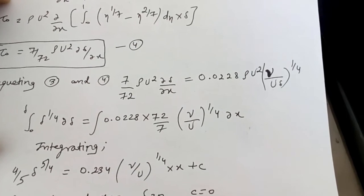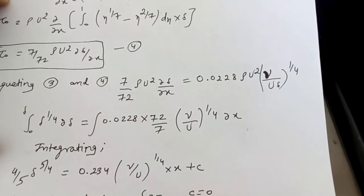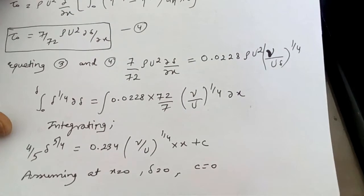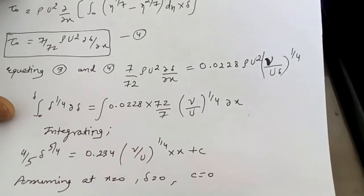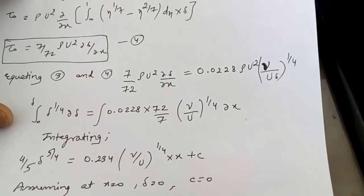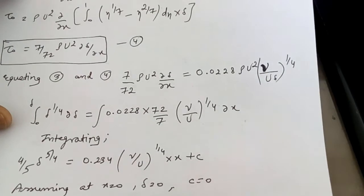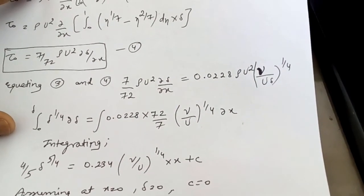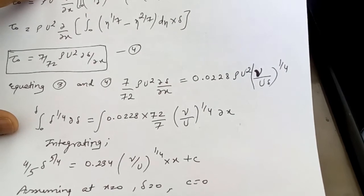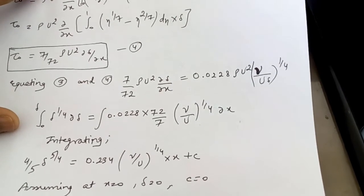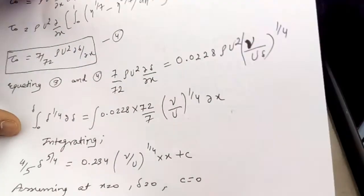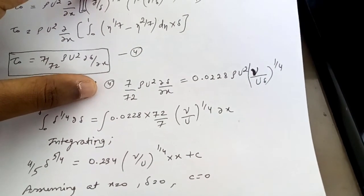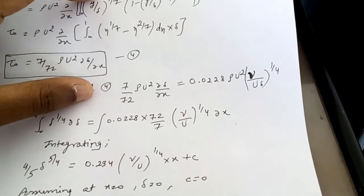Assuming at x = 0, δ = 0, the constant of integration C = 0. There is some error introduced here because at the leading edge a laminar boundary layer forms first, not a turbulent one — but for the sake of solving, we assume δ = 0 at x = 0 for the turbulent boundary layer.